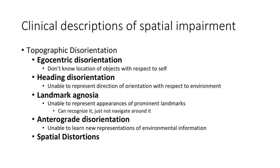The fourth type is anterograde disorientation. Patients have no problem navigating in formerly familiar environments, but they experience difficulty in novel environments because they have an inability to learn about unfamiliar objects just by looking at them. So if you show a novel object and then a few seconds later show them a group of objects including that novel one, they cannot identify it. However, they are able to recall novel auditory and tactile information. Damage to the parahippocampal gyrus on the right side is often associated with this condition.